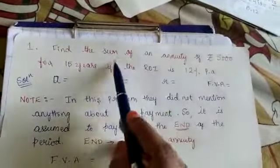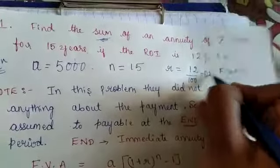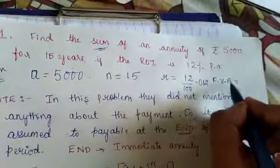Now let's identify the given values. A value is 5000 rupees. Number of years n equals 15 years. Rate of interest r equals 12%, which is 12 by 100, that is nothing but 0.12.